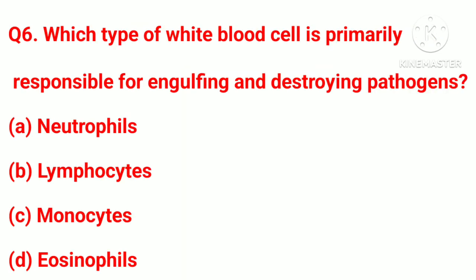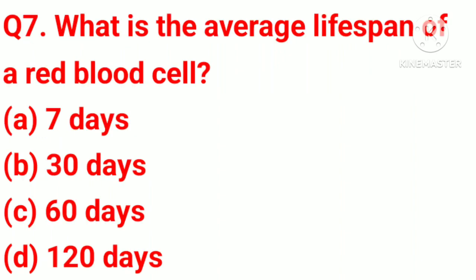Question number 6. Which type of white blood cell is primarily responsible for engulfing and destroying pathogens? Option A, neutrophils. Option B, lymphocytes. Option C, monocytes. Option D, eosinophils. Correct answer: Option A, neutrophils.